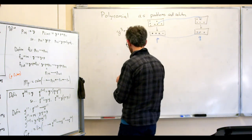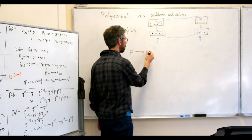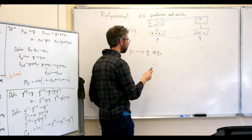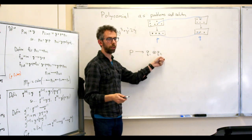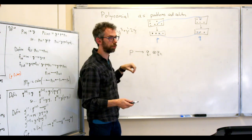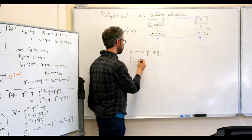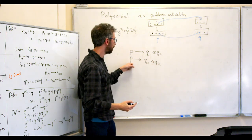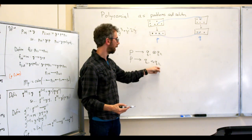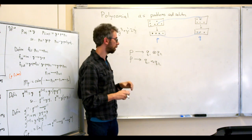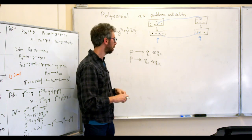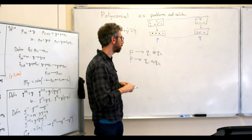A map from p to q₁ tensor q₂ means for every problem in p you ship it to a problem in q₁ and q₂, and when they each solve their problem independently, you take that pair of results and return a solution to p. A map from p to q₁ composed q₂ is a two-step procedure: hand it to q₁, take whatever solution it gives, hand that to q₂, and return the final solution in p.